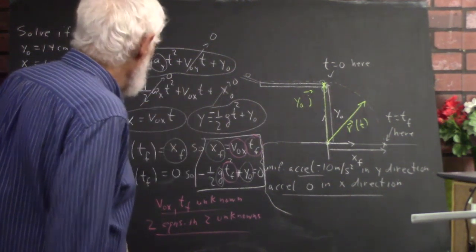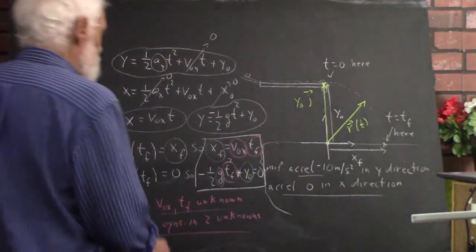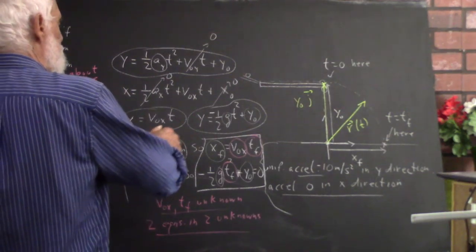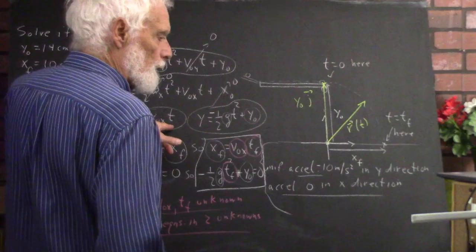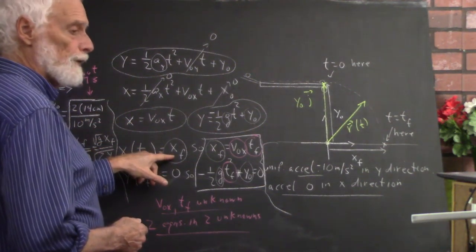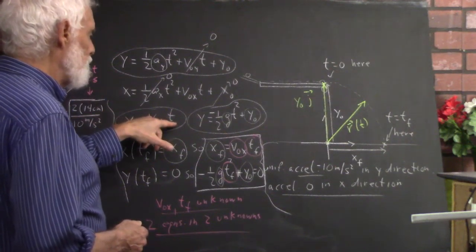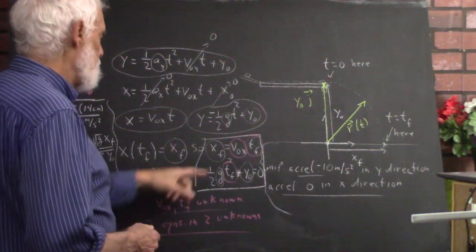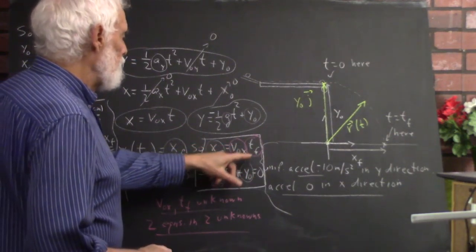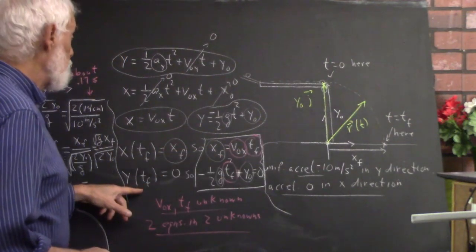We've got these two equations. We know the acceleration in the y-direction — that's just g, which is known. y-naught is known, but neither v-naught-x nor the time of fall is known. When x equals x-sub-f, t equals t-sub-f, giving us the x-equation. x-sub-f is something we know, but t-sub-f and v-naught-x are unknowns, so we need more information — fortunately we have that from the vertical motion.